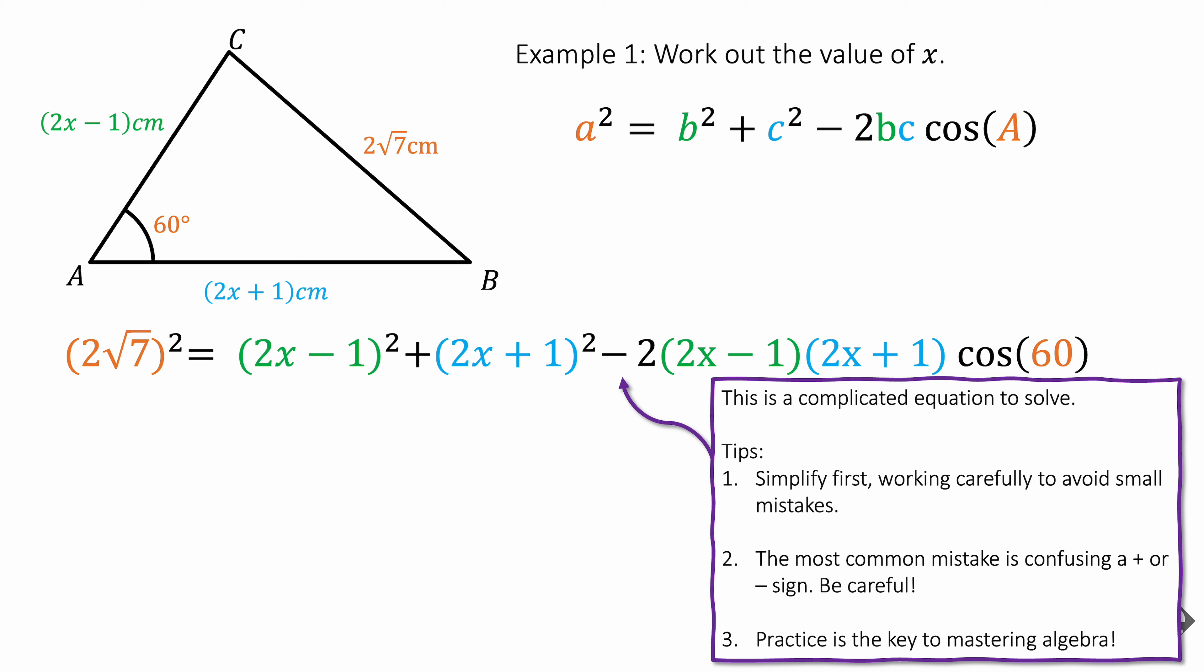The most common mistakes is issues with your positive and negative signs. For example, if you're multiplying two negatives together, make sure it's a positive and just keep track of that because it's easy to forget when you're doing lots of algebra. And practice is key. Do a lot of questions like this and you'll get more fluent with your algebra. Practice makes perfect.